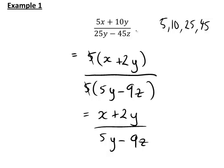Now could we have also taken any letters out as common factors? There might be a temptation to cancel the y's since y appears on the numerator and denominator. But that is not possible, as y does not appear as part of the x term or the 9z term. Remember that the letter or number factor must appear in every term on both numerator and denominator if we are going to simplify in this way.